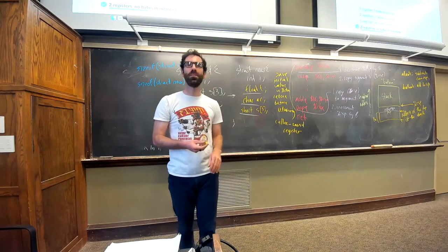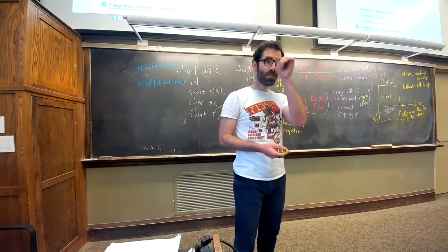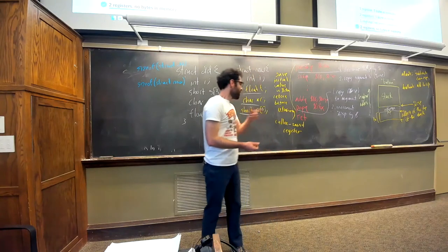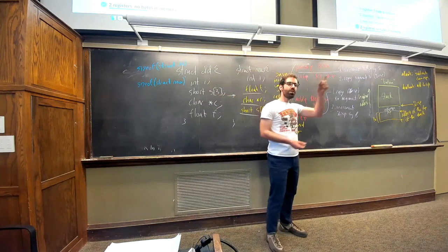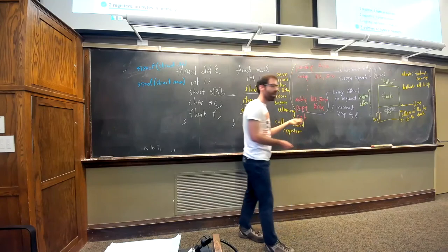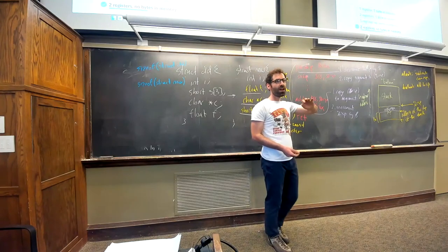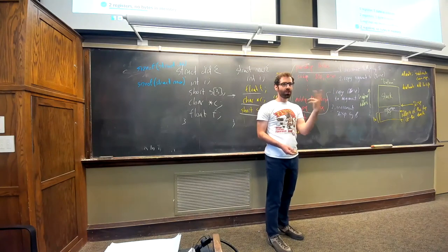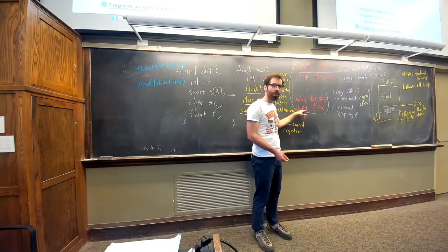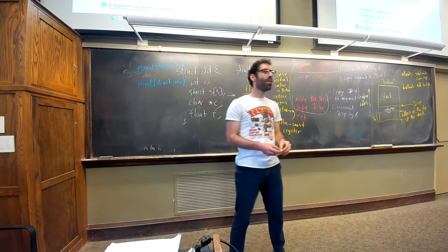If we have two different things to save — say both RBX and RBP are callee-saved registers — we push RBX and push RBP at the beginning, and then pop RBP and pop RBX at the end in reverse order.